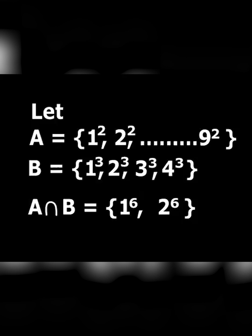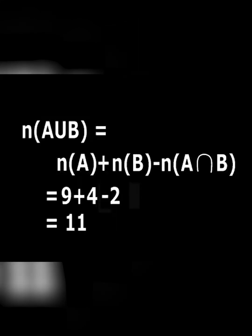Therefore, A∩B is the set of all perfect sixth powers less than 100, so A∩B = {1⁶, 2⁶}. Therefore, n(A∪B) = 9 + 4 − 2 = 11.